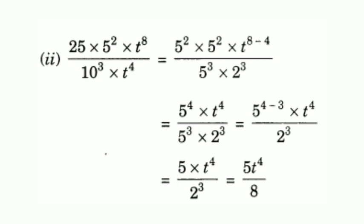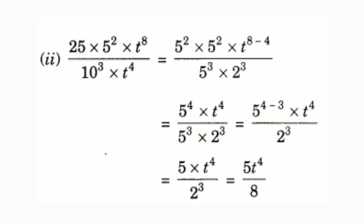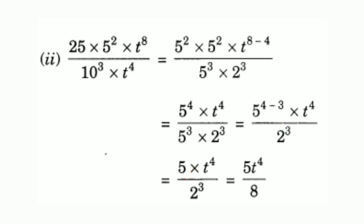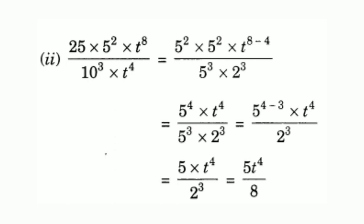We now have 5 raised to 4 into t raised to 8 minus 4 — that is t raised to 4 — on the numerator, divided by 5 raised to 3 into 2 raised to 3. Applying division laws: 5 raised to 4 minus 3 gives 5, into t raised to 4, divided by 2 raised to 3 which is 8. Multiplying the numerator: 5 into t raised to 4, giving the final answer 5t⁴ divided by 8.